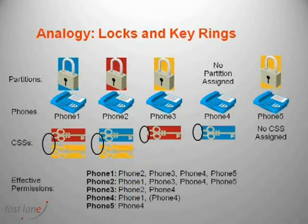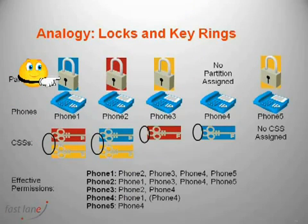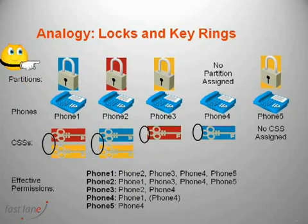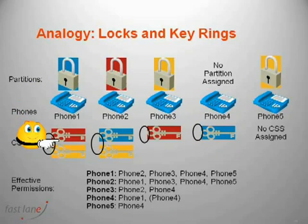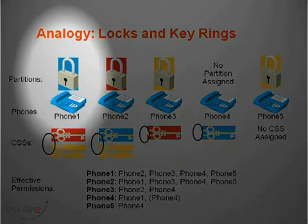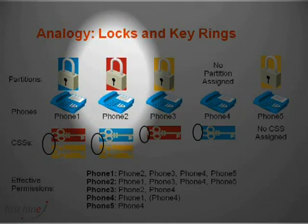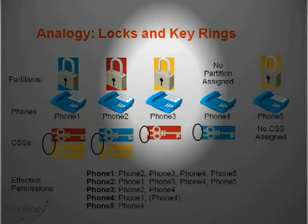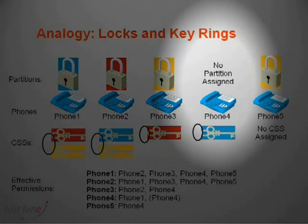We can also use the analogy of locks and keys. The locks correspond to the partitions, which control who can access our directory numbers, and the keys correspond to calling search spaces, which control which locks we can open — or in other words, which directory numbers we have access to. Phone 1's directory number is in the blue partition. Phone 2's directory number is in the red partition. Phone 3 is in the yellow partition. Phone 4's directory number has not been assigned to a partition — in other words, it's in the null partition.